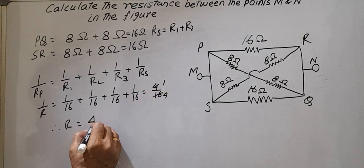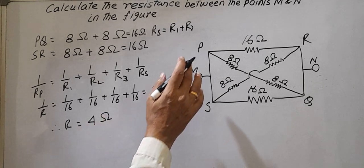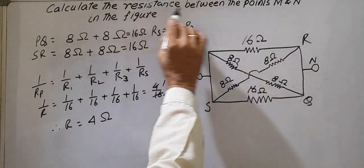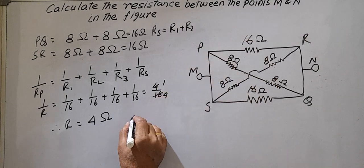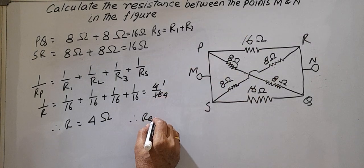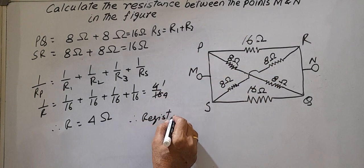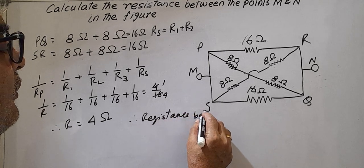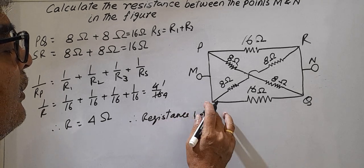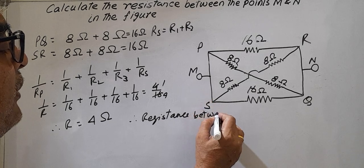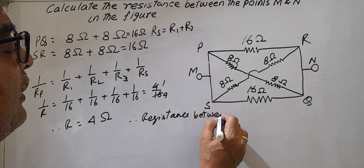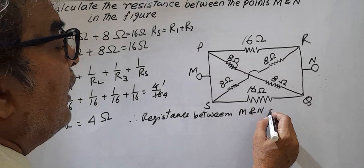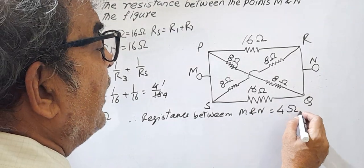Therefore Rp equals 4 ohms. That means the equivalent resistance between M and N is therefore resistance between M and N equals 4 ohms. That is your answer.